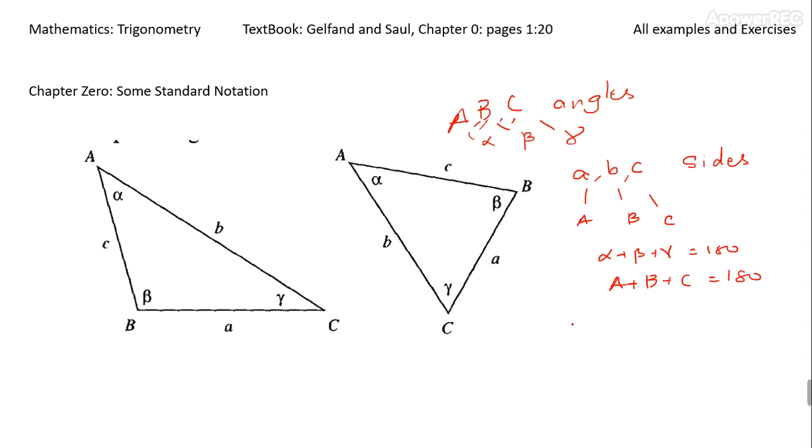So basically, if this and this side... for example, if a squared plus b squared happens to be more than c squared, then this angle gamma is going to be acute, is going to be less than 90.